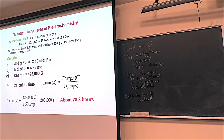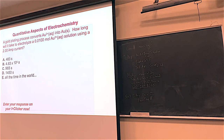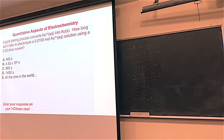Here's another example: we're turning gold 3+ ions into gold metal. Before we go any farther — how many electrons are going to be transferred per mole of gold made? Three. Three moles of electrons per mole of gold.